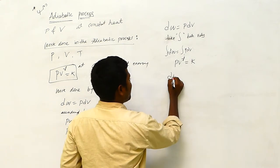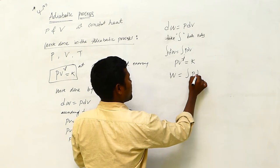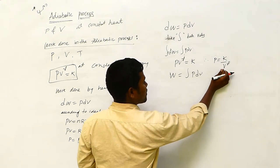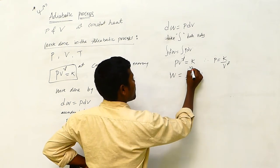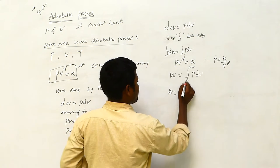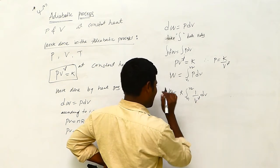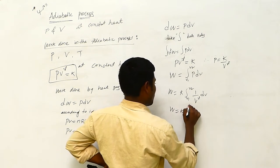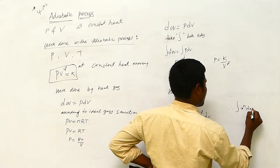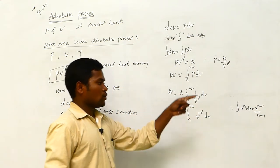Directly we are having PV to the power gamma equals K. Substitute this into W = integration of P dV. Since P = K divided by V to the power gamma, substitute it. Volume goes from V1 to V2. Using the standard integral formula: integration of x to the power n dx equals x to the power (n+1) divided by (n+1), the same thing we apply here.